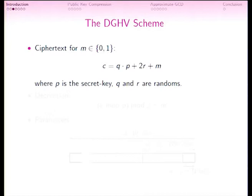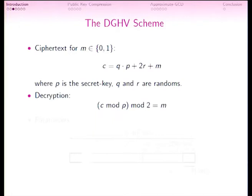In the DGHV scheme, the ciphertext C is an approximate multiple of P — a multiple of P plus some noise 2R plus the message bit M. To decrypt, we reduce modulo P to eliminate the large term, leaving 2R plus M, then reduce modulo 2 to look at the least significant bit and recover M. Without the secret key P, you cannot decrypt because M is masked by the term Q times P.